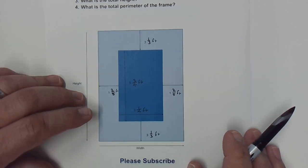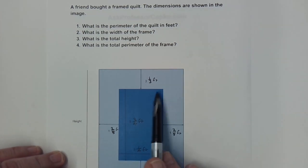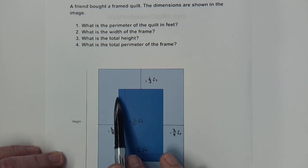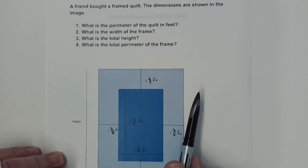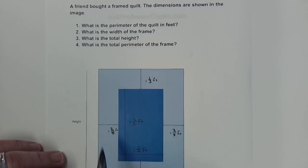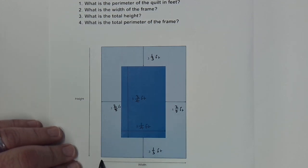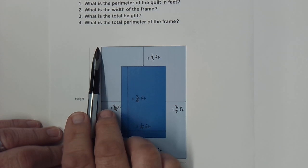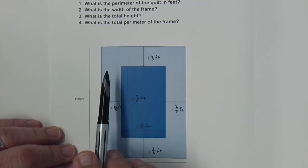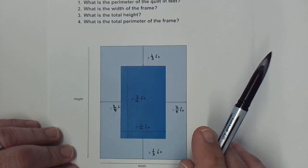Let's see what the questions are asking. First, what is the perimeter of the quilt in feet — remember, perimeter is the distance all the way around, like how much fencing you'd need or how long a string going around all four corners would be. Second, what's the width of the frame? Third, what is the total height from the bottom to the top of the frame? And fourth, what is the total perimeter of the frame?